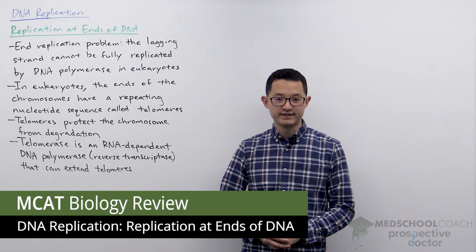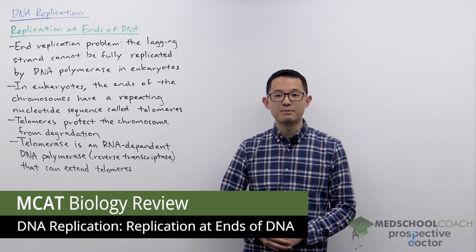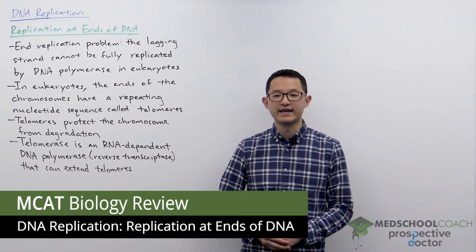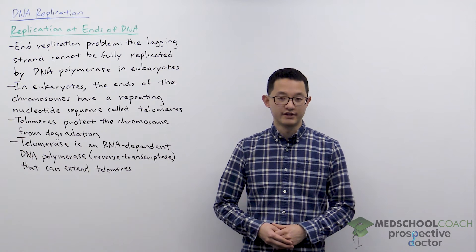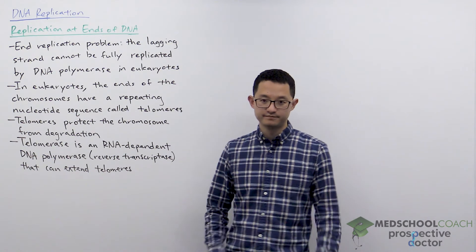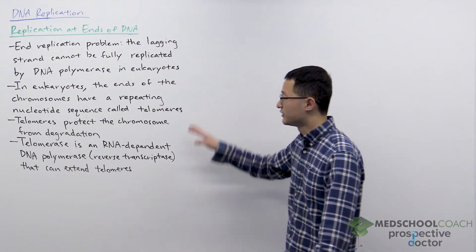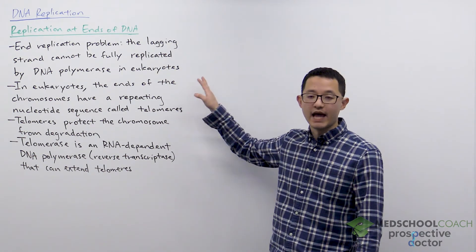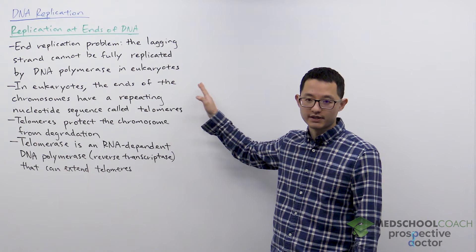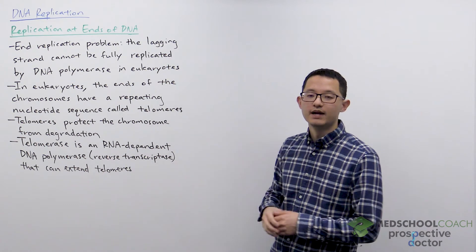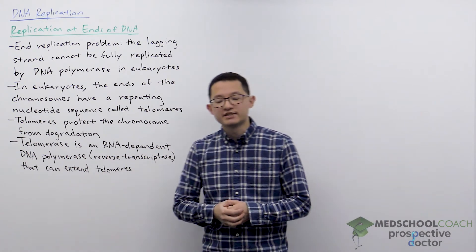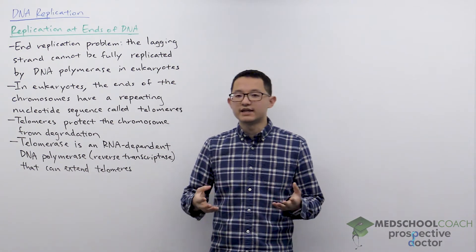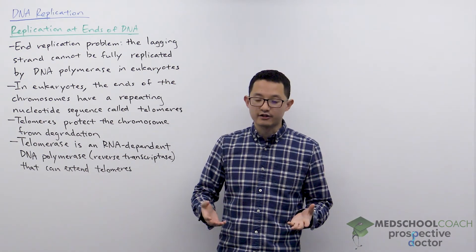In this video, we're going to discuss replication at the ends of DNA for eukaryotes. In eukaryotes, there is what is called the end replication problem, and this is best understood by taking a look at this diagram.